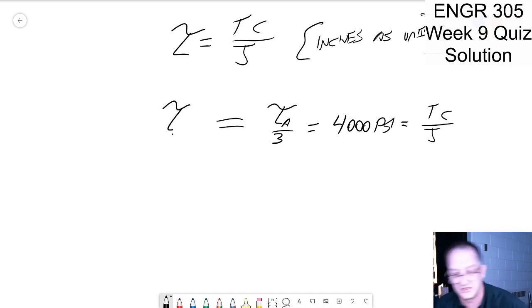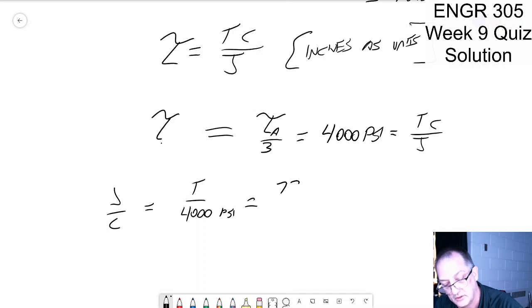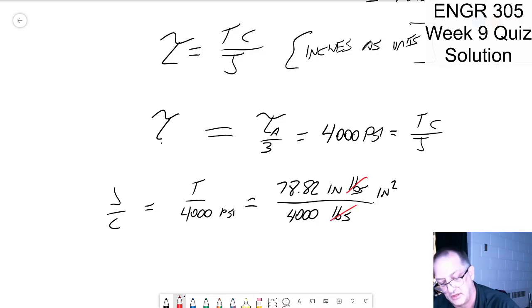tc over j. And so now we start rewriting this. So it's j over c is equal to t over four thousand psi. I can rewrite the torque as 78.82 inch pounds divided by four thousand pounds and I'm going to put square inches on top. Now you can see I've got my pounds cancel out, I get inches to the third.